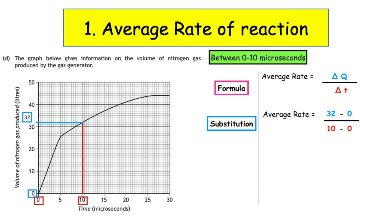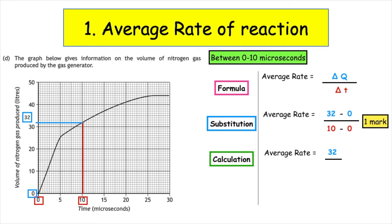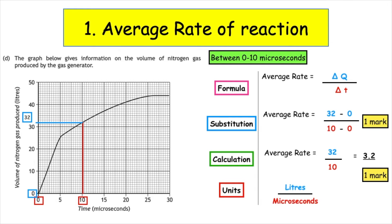We then finish our substitution — small numbers taken away from big numbers — so 32 minus 0, and that gets us one mark. When we put that into our calculator, that becomes 32 divided by 10, which gives us 3.2. For our units, we look at the axis labels: quantity is in litres and time is in microseconds, so we rewrite that as litres microseconds to the minus 1.